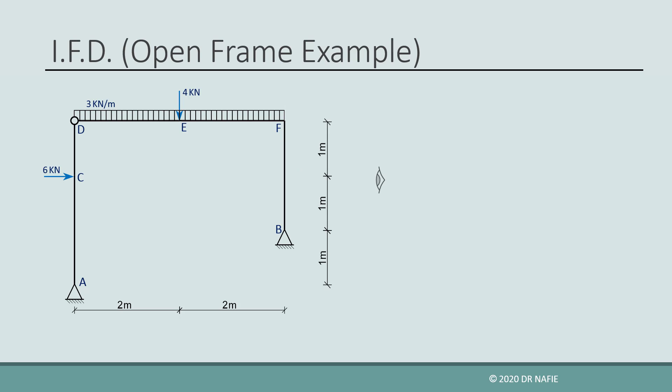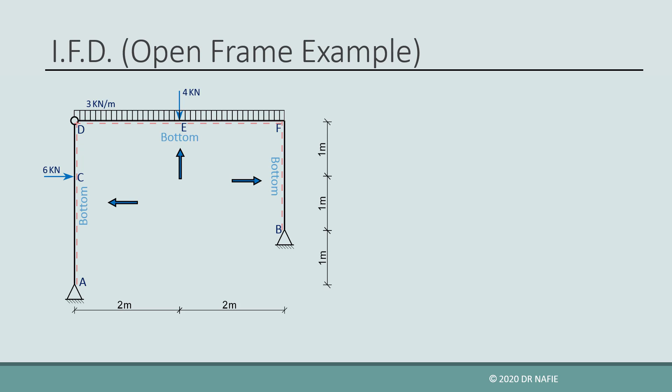If we change our position and look at the element from the outside, all the directions will be reversed. Because the directions are especially important for the sign convention and the way we draw the internal force diagrams, it is important to clearly identify the way we are looking at the different frame elements. Therefore, we usually draw a dashed line beside each frame element to indicate the way we look at the element. The dashed line indicates the bottom side of the element.